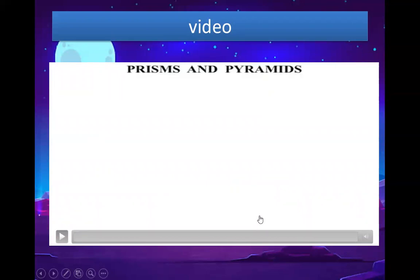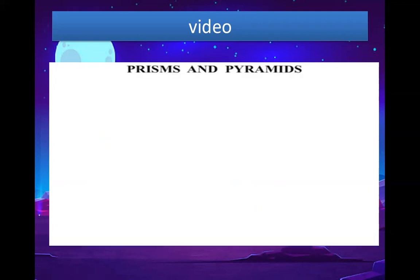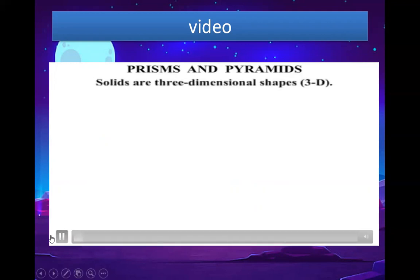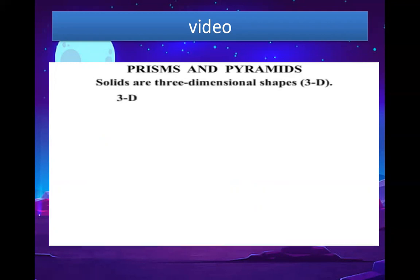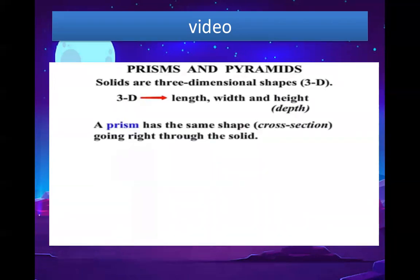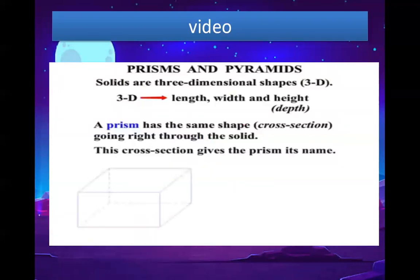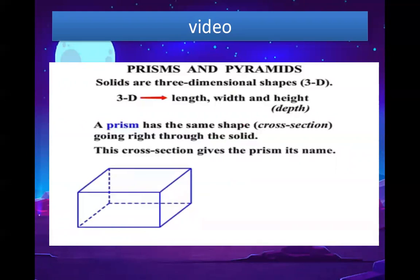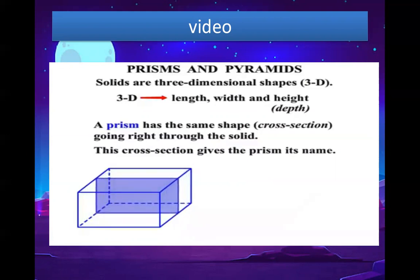Let's watch a video on prisms and pyramids. Now in this lesson we take a look at prisms and pyramids. Solids are three-dimensional shapes — 3D. When we talk about 3D, we're talking about length, width and height — they are the three dimensions. Sometimes height is known as depth. A prism has the same shape or cross section going right through the solid. This cross section gives the prism its name. That rectangular shape or cross section goes right through the solid, so that is known as a rectangular prism.